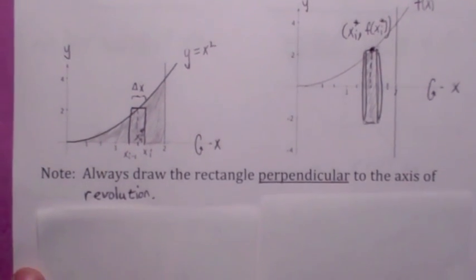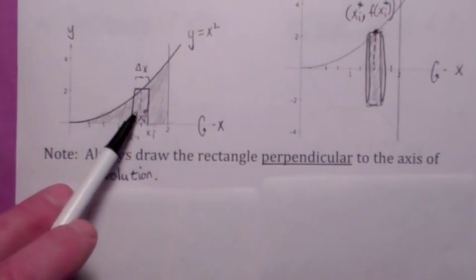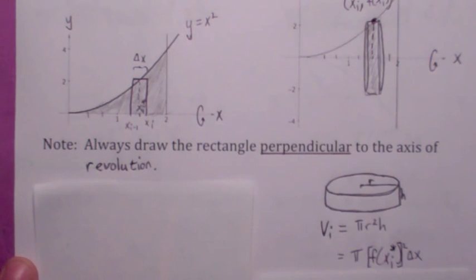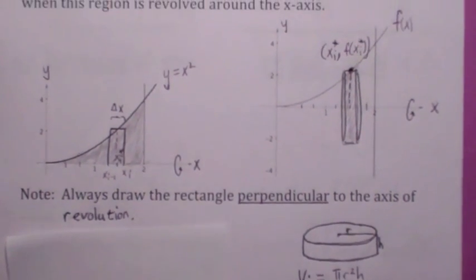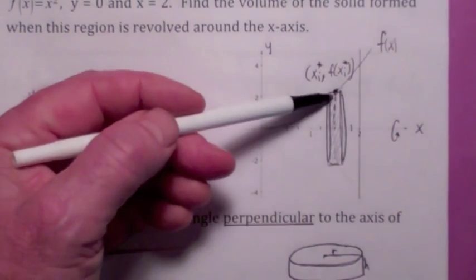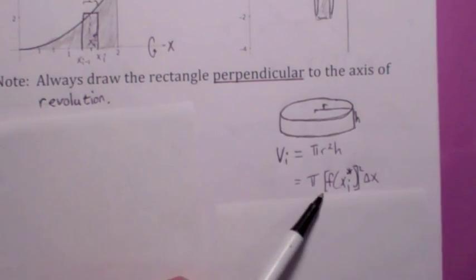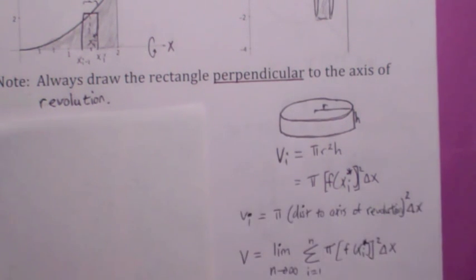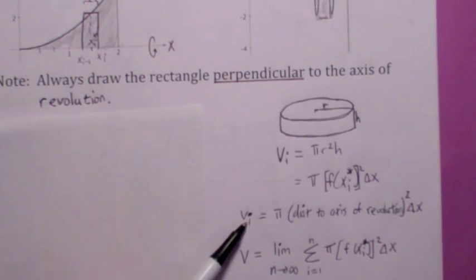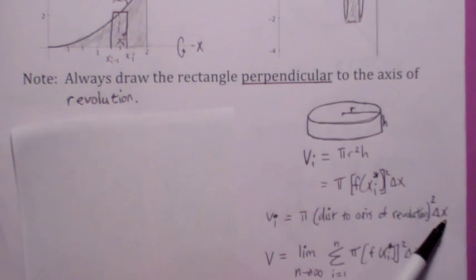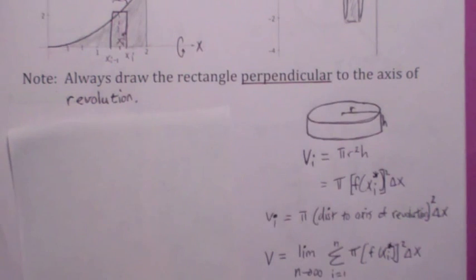One thing that's really important to keep straight is when you do this, you should always draw your rectangle perpendicular to the axis of revolution. Always. The volume of that typical cylinder is pi r squared h. The radius in this particular problem is actually equal to the y-coordinate, so the radius becomes f of x sub i star, and the height becomes delta x. In general, it's going to be pi times the distance to the axis of revolution squared times delta x — it's not always going to be f of x. We'll see some examples in a little bit.